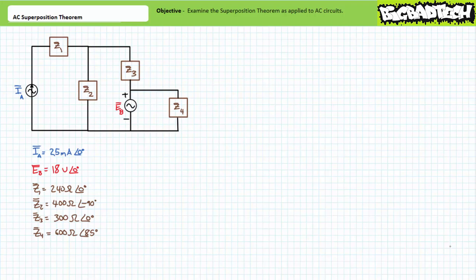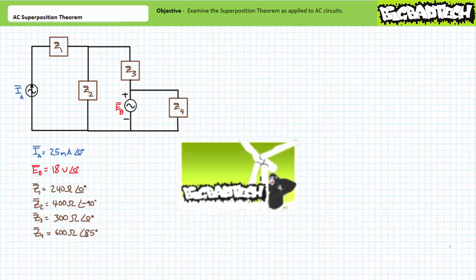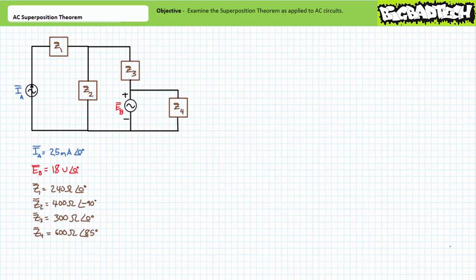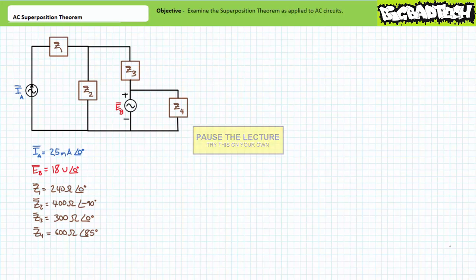This is one of my favorite types of circuits to begin discussion of superposition theorem since it dramatically illustrates the effects of opens and shorts in the as-analyzed circuit. For those of you skilled in DC circuit analysis, you'll note AC superposition theorem is essentially identical to the superposition theorem as applied to DC circuits — only we're adding phasors. If you feel so qualified, pause the lecture and try this on your own. If not, feel free to follow along.